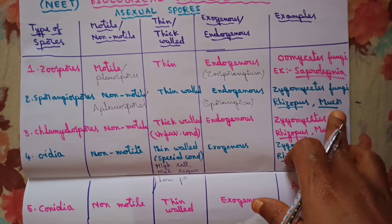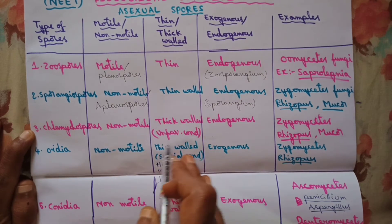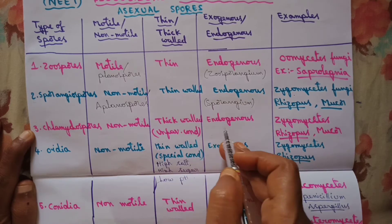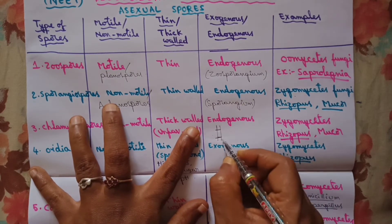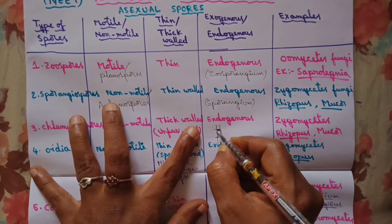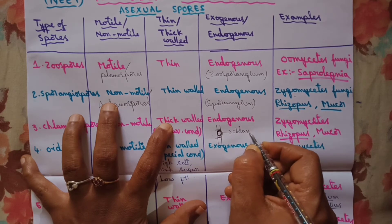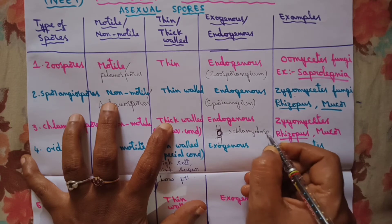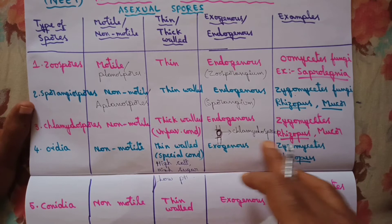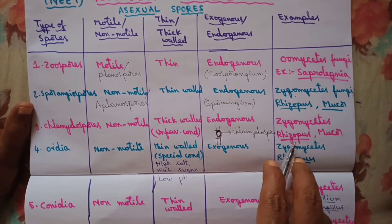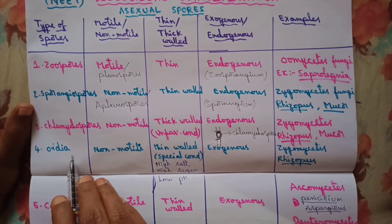The next type of spores are chlamydospores. These are non-motile, thick-walled spores formed under unfavorable conditions, and they are endogenous in origin. Inside the fungal mycelium, some protoplast becomes surrounded by a thick wall, resulting in the formation of a chlamydospore. When favorable conditions arise, these chlamydospores come out of the mycelium and germinate into new fungal mycelium. Zygomycetes fungi, especially Rhizopus and Mucor, form chlamydospores under unfavorable conditions.